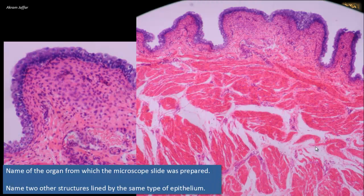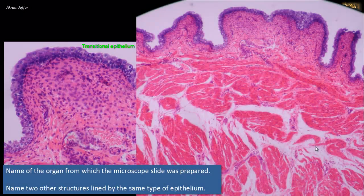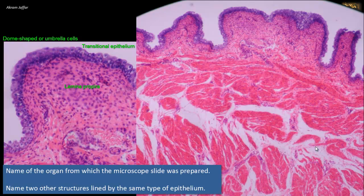Name the organ from which the slide was prepared, and name two other structures lined by the same type of epithelium. In the photomicrograph on the left, a magnified view of the transitional epithelium of the mucosal layer shows stratified epithelium whose surface cells, when relaxed, are cuboidal and bulge into the lumen — called dome-shaped or umbrella cells. The mucosa has lamina propria made of dense irregular connective tissue. The extensive muscular layer with irregularly arranged smooth muscle fibers allowing mass contraction suggests the section is prepared from the urinary bladder.